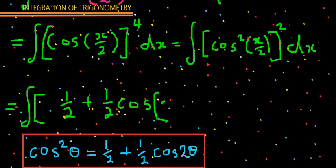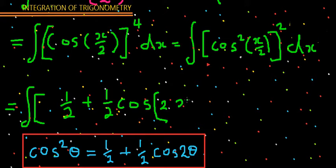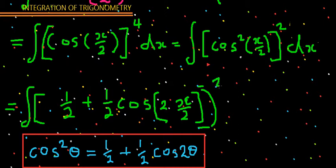Notice that the angle here is theta, and the two is multiplying by two. When you substitute, your angle becomes x over two, so multiplying by two gives back x. So the angle inside becomes one-half times two, which is x. Then close the bracket — the square still remains because you are dealing with the inside part.